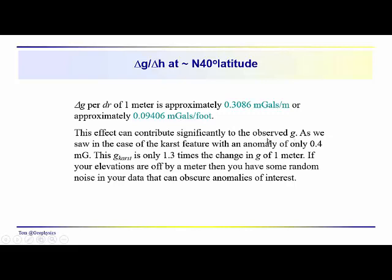As we mentioned, if they're ignored, they contribute significantly to the observed value of G that you have. In the case of the karst feature that we talked about in a preceding video, that karst feature produced an anomaly of only 0.4 milligal. That's just a little over 1.3 times the change in G associated with a one meter change in elevation. So if your elevations are off by a meter, then you have some random noise in your data that can obscure the anomalies that you're interested in, such as this karst feature. Depending on the anomalies that you're looking for, and you usually do some modeling in advance, you know the precision with which you need to measure elevations in order to be able to see the anomaly that you're looking for.